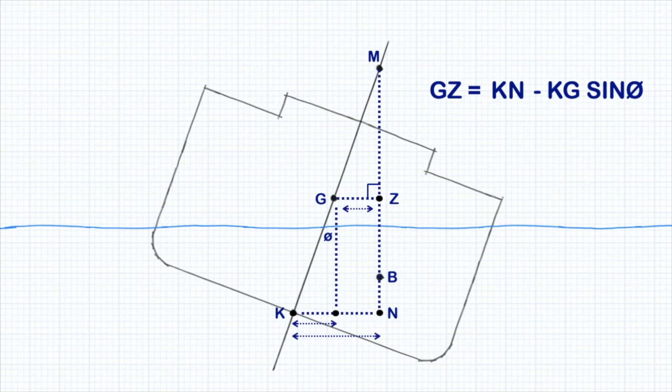This simple formula can be used to calculate righting levers for any angle of heel as long as we know our KG and the value of KN from our stability book.